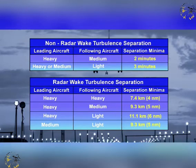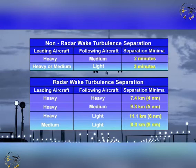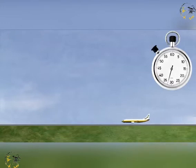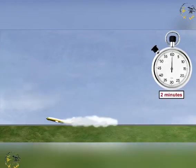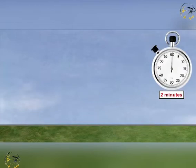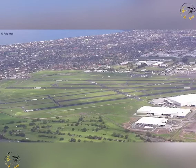This completes wake turbulence separation for arriving aircraft. Next, we will look at wake turbulence separation for taking off and departing aircraft. Wake turbulence separation on departure is the minimum time from when the leading aircraft becomes airborne to the time when the following aircraft becomes airborne. However, not all departing aircraft take off from the same runway, and this adds a degree of complexity to the separation, as some airports have a number of runway systems where wake turbulence can affect several runway operations.